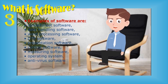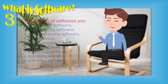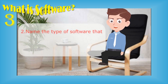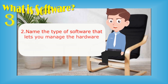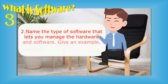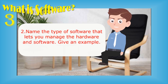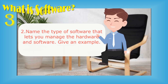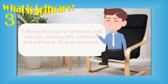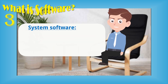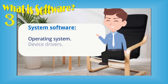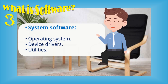Question number two: name the type of software that lets you manage the hardware and software, and give an example. The answer is system software. Examples of system software are operating system, device drivers, and utilities.